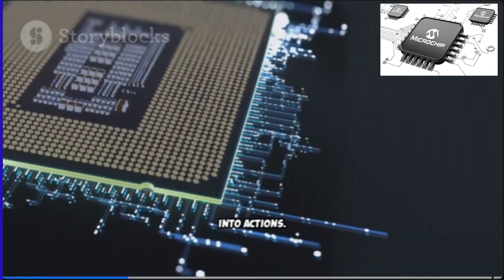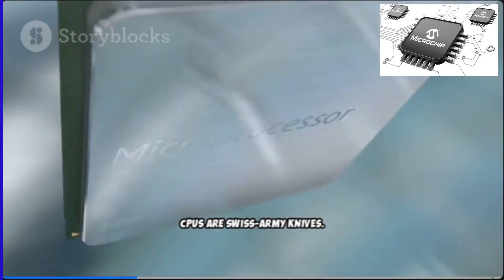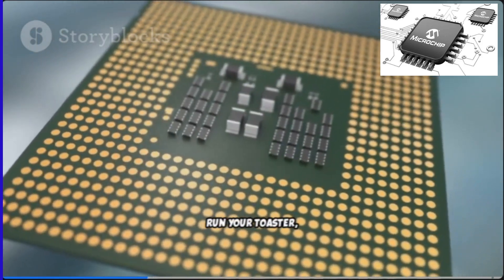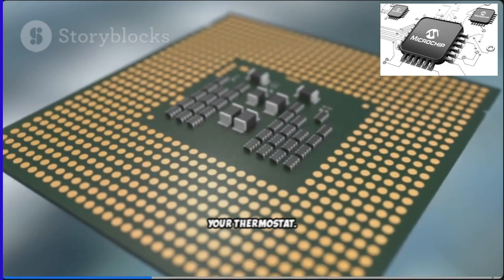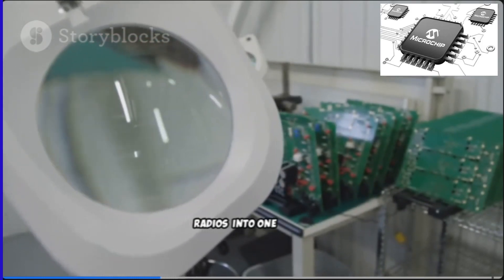Different chips, different jobs. CPUs are Swiss army knives. GPUs are massive parallel engines for pixels and math. Microcontrollers run your toaster, your key fob, your thermostat. SoCs pack it all: CPU, GPU, memory, radios into one brain.